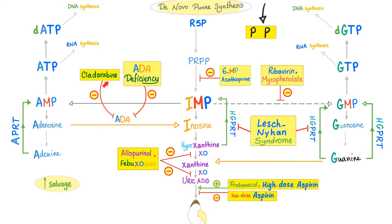There is a drug that inhibits adenosine deaminase. The function of adenosine deaminase is to take adenosine and deaminate it into inosine. There is also a disease — adenosine deaminase deficiency — where this enzyme is deficient. And there is another disease called Lesch-Nyhan syndrome, which has deficiency of the enzyme hypoxanthine-guanine phosphoribosyltransferase (HGPRT).